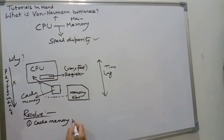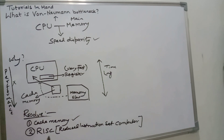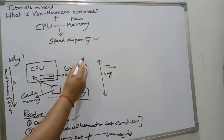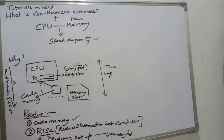Another solution is using a special type of computer known as RISC — Reduced Instruction Set Computer. RISC uses a lot of registers internally, meaning it doesn't need to access main memory as frequently. Since access to main memory is reduced, performance does not take a hit, because most processing uses these fast internal registers. As a result, performance does not decrease and the Von Neumann bottleneck does not arise in these systems.